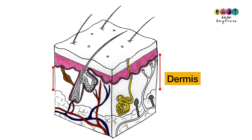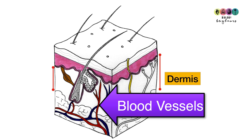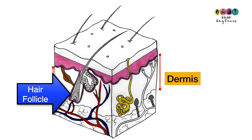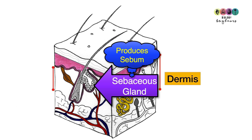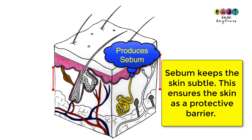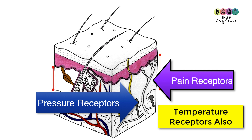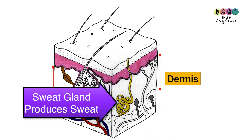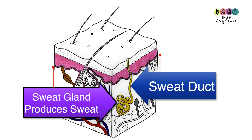Below the epidermis is the second layer of the skin — the dermis. Here you find blood vessels responsible for providing oxygen and nutrients to the skin. You also find the hair follicle and the sebaceous gland, which produces an oil called sebum. Sebum keeps the skin supple, moist, and maintains it as a physical barrier. The dermis also contains receptors that detect pressure, pain, and temperature, as well as sweat glands that carry sweat to the surface through sweat ducts.